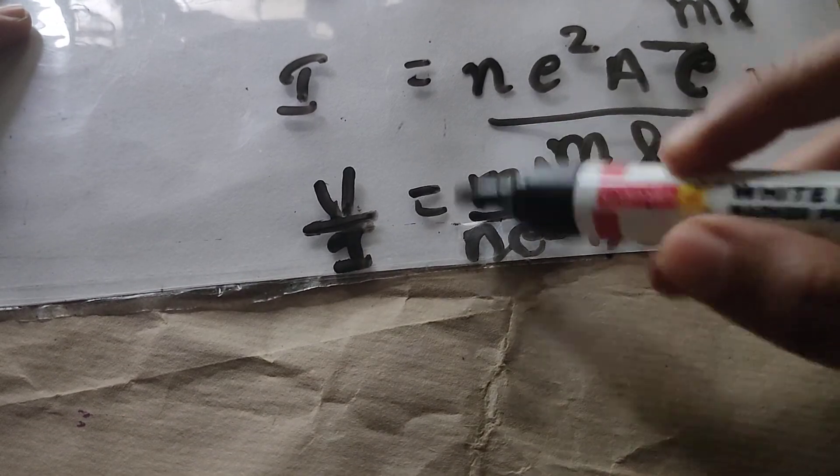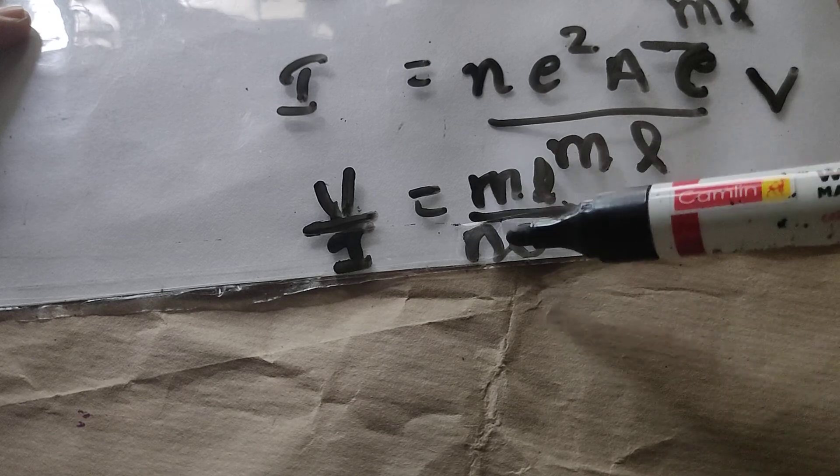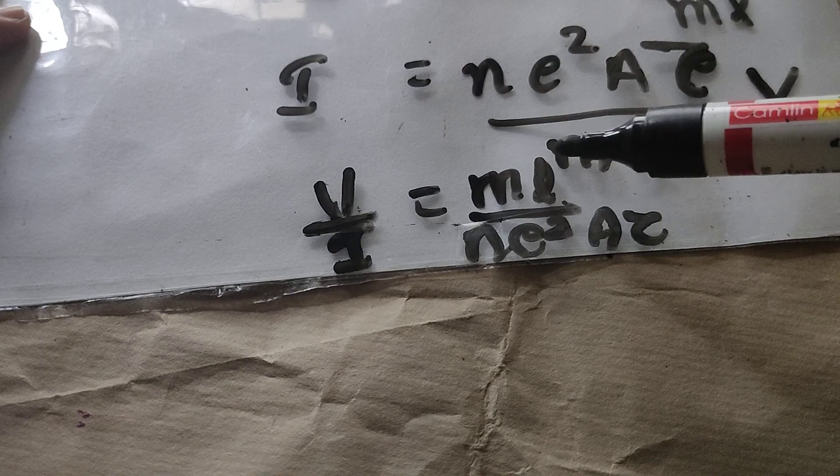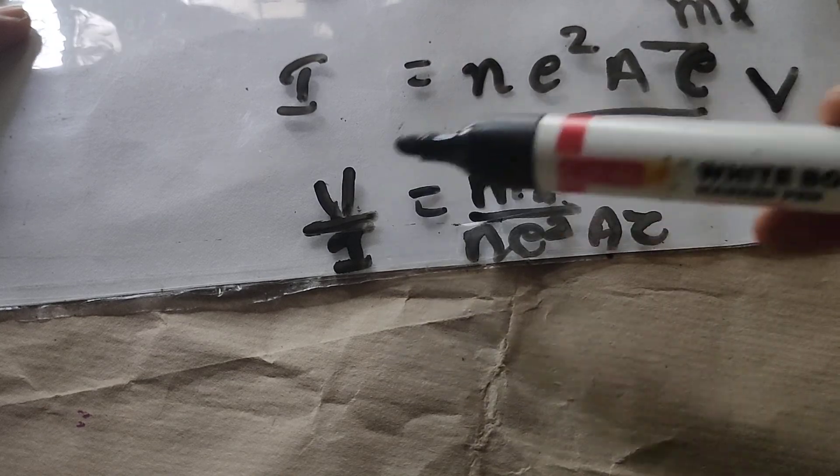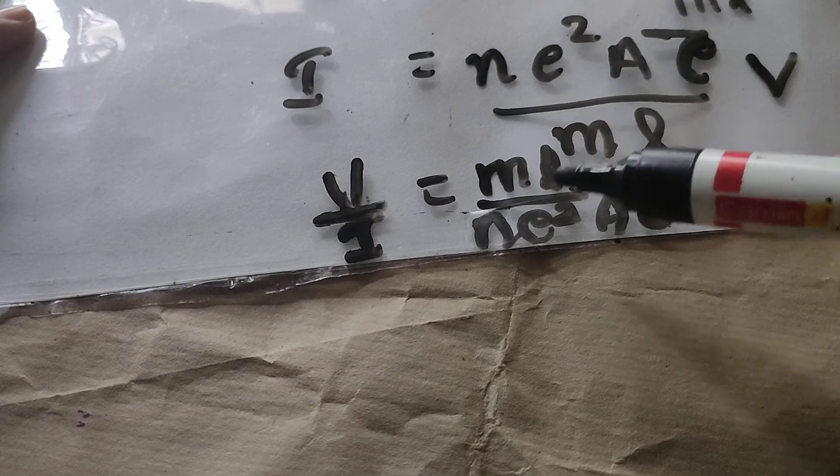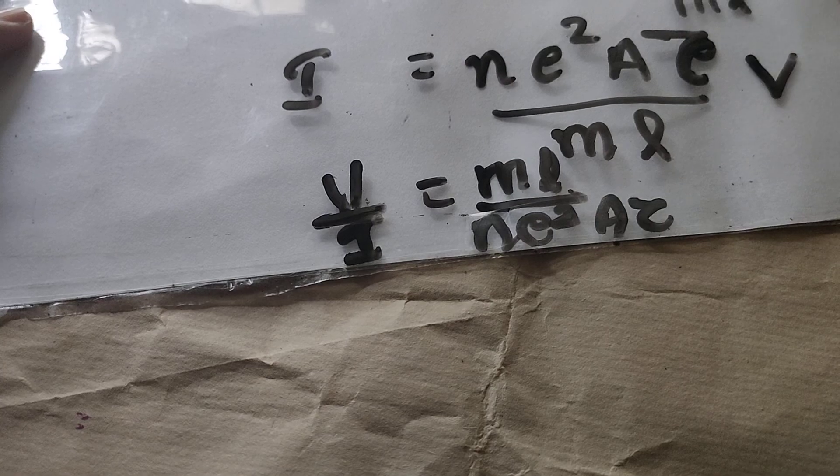So, this equation, and we know m, L, N, e square, A, tau, all are constants. So, that proves our Ohm's law, V by I is equal to R and here R is equal to mL by Ne square A into tau.